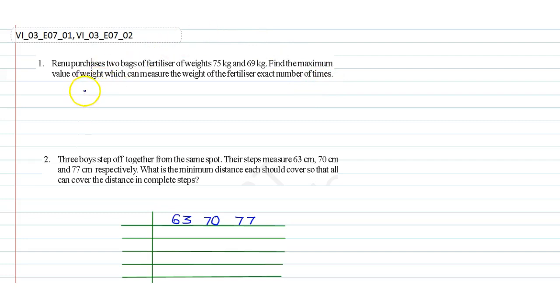In this case, we have to find the HCF of 75 and 69. We can write 75 is equal to 3 into 5 into 5, and 69 is equal to 3 into 23.